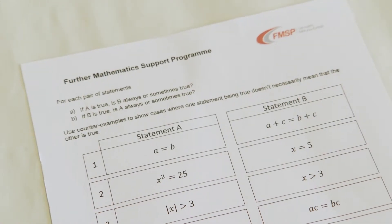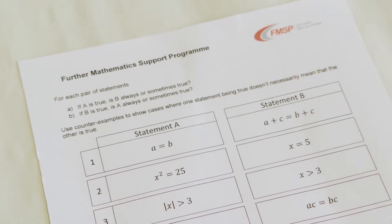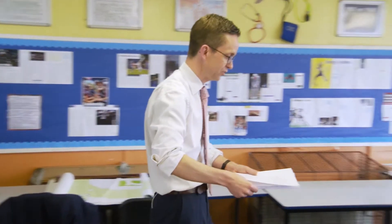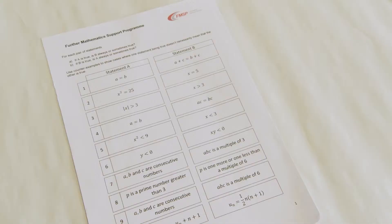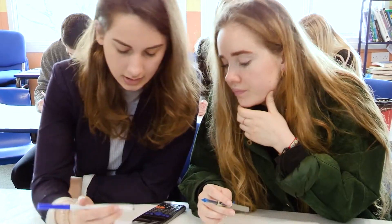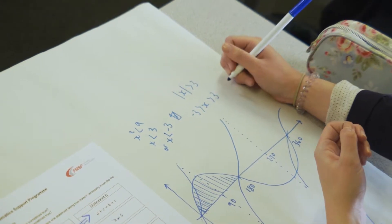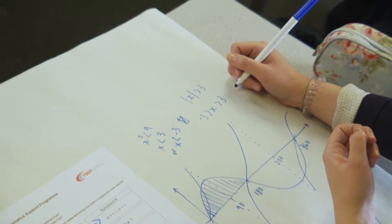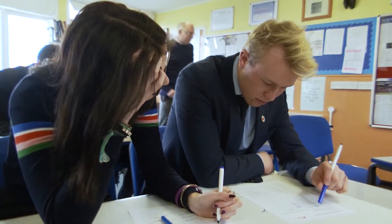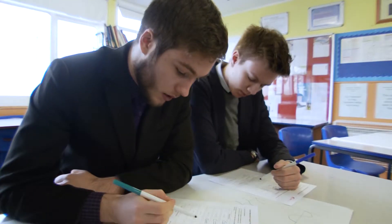Students are given 10 statement pairs, each with a statement A and a statement B, on individual copies. In the group of 10, they were a really good mixture — quite a few that the majority got fairly quickly, seeing the nuances. They recognised with the modulus sign that there could be a negative solution. But some others really got them to think about zeros and different ways of arguing.